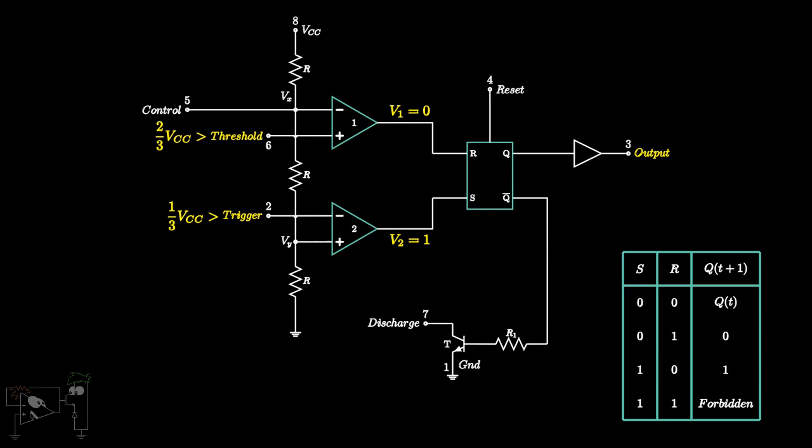That means the inputs of the flip-flop R equals 0 and S equals 1. Hence, the output of the flip-flop and hence the output of the timer will be high.